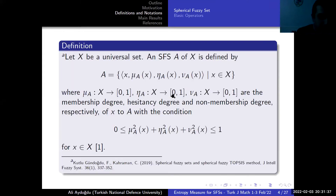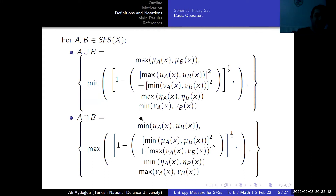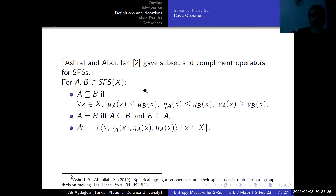Spherical fuzzy sets were introduced by Gundot and Kahraman, where the membership degree, hesitancy degree, and non-membership degree are each between zero and one independently, and the sum of these degrees is between zero and one. We denote S(X) as the collection of spherical fuzzy sets on the universal set X. Kutlu, Gundot, and Kahraman introduced union and intersection operators for spherical fuzzy sets, given by the following equations.